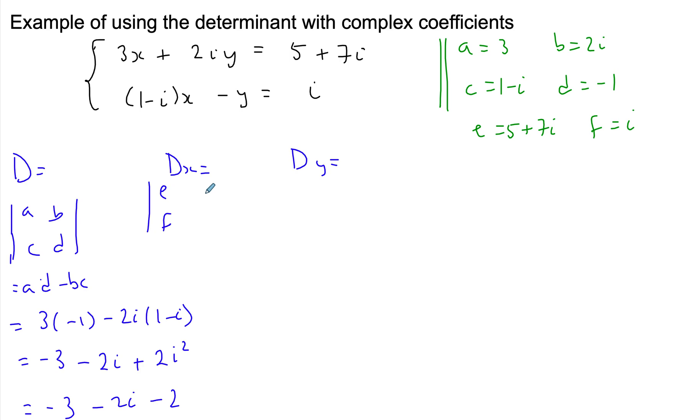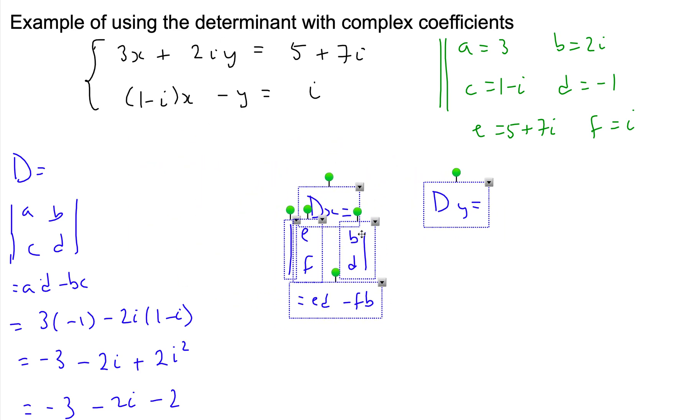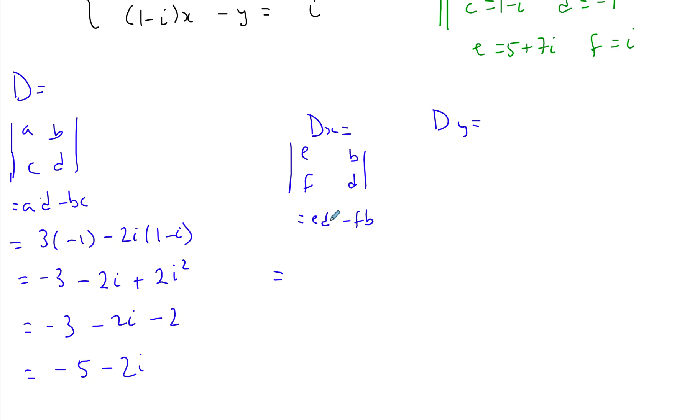So you take ED - FB, and you can calculate that on your own. Just move these to the side. For the first one, what you're going to get is -3 - 7i.